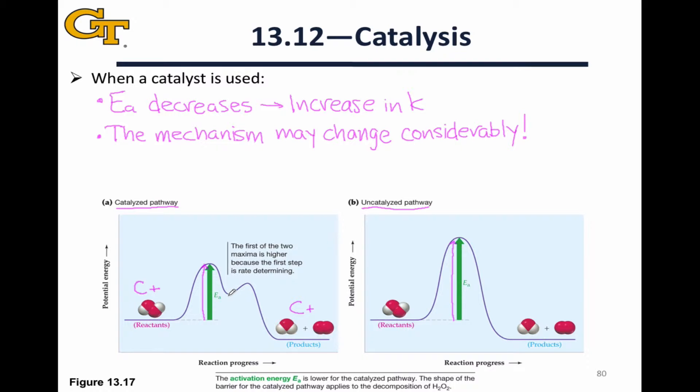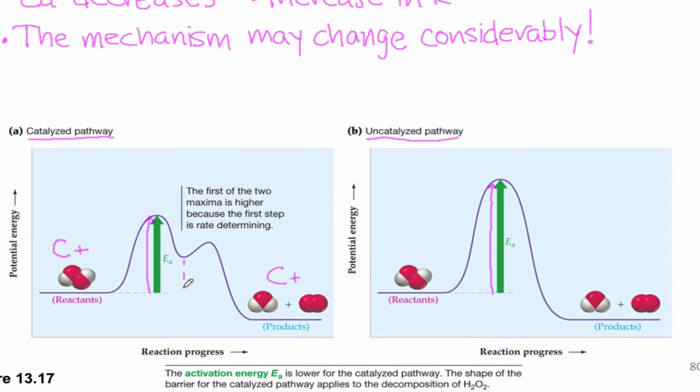In fact, in the diagram at the bottom of this slide, we can see that the catalyzed pathway is a two-step process. Step one is the slow step and step two is a quicker step, while the uncatalyzed pathway is a single-step process with one transition state going from reactants to products.